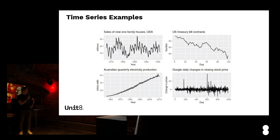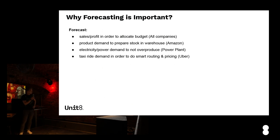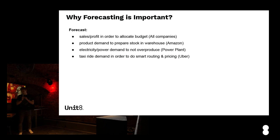When we speak about time series, what are the examples? Time series are everywhere. It can be sales of a product over time, the price of a stock on the market, or electricity production in some country. Time series forecasting is important because companies need to forecast sales or profit to allocate budgets, forecast product demand to prepare warehouse stock, and predict power or electricity demand to avoid overproduction or underproduction.